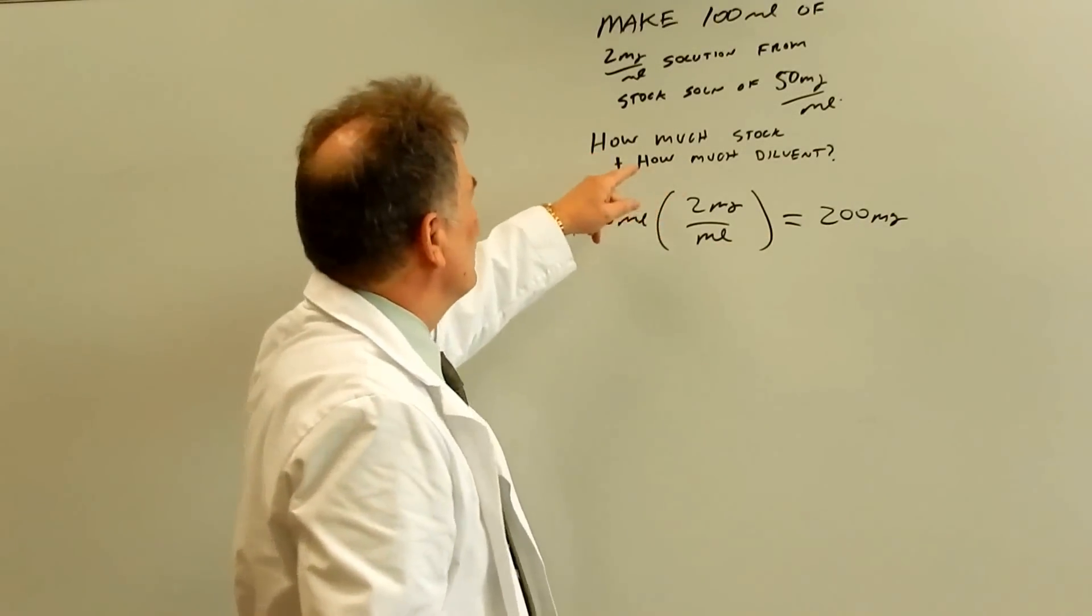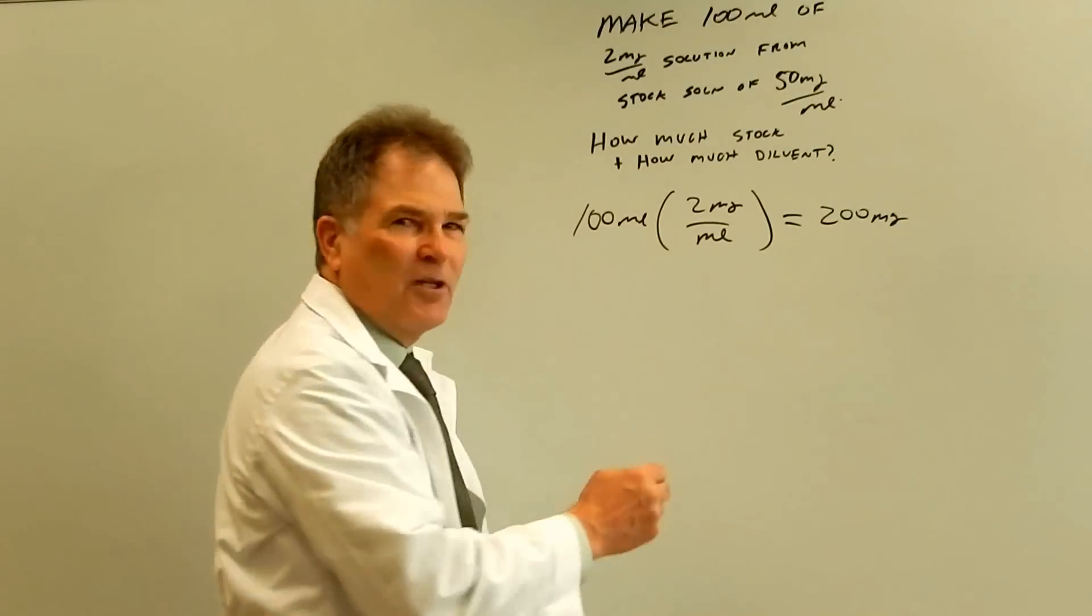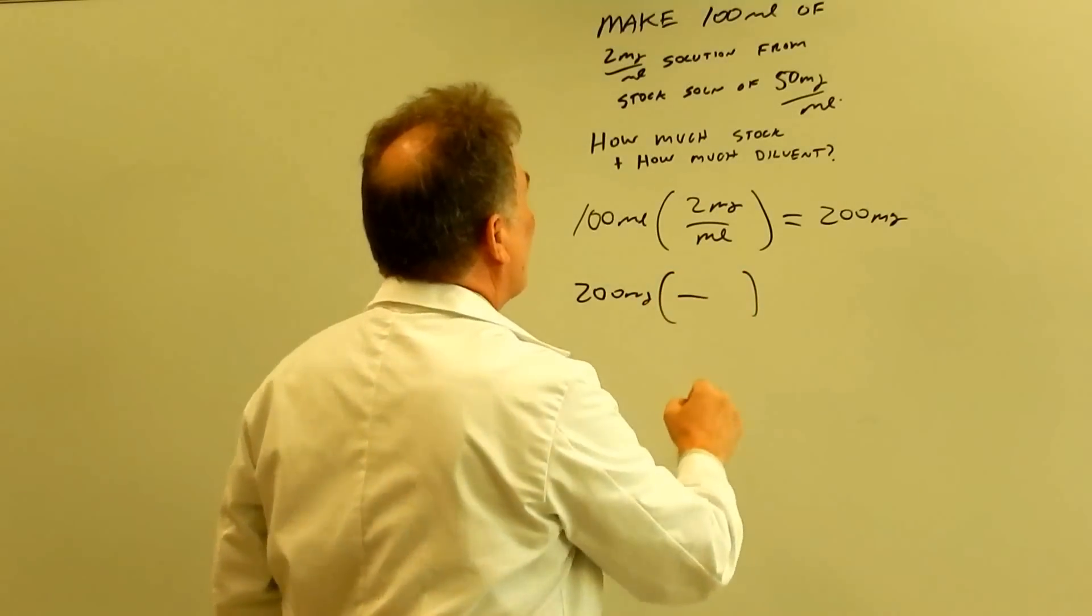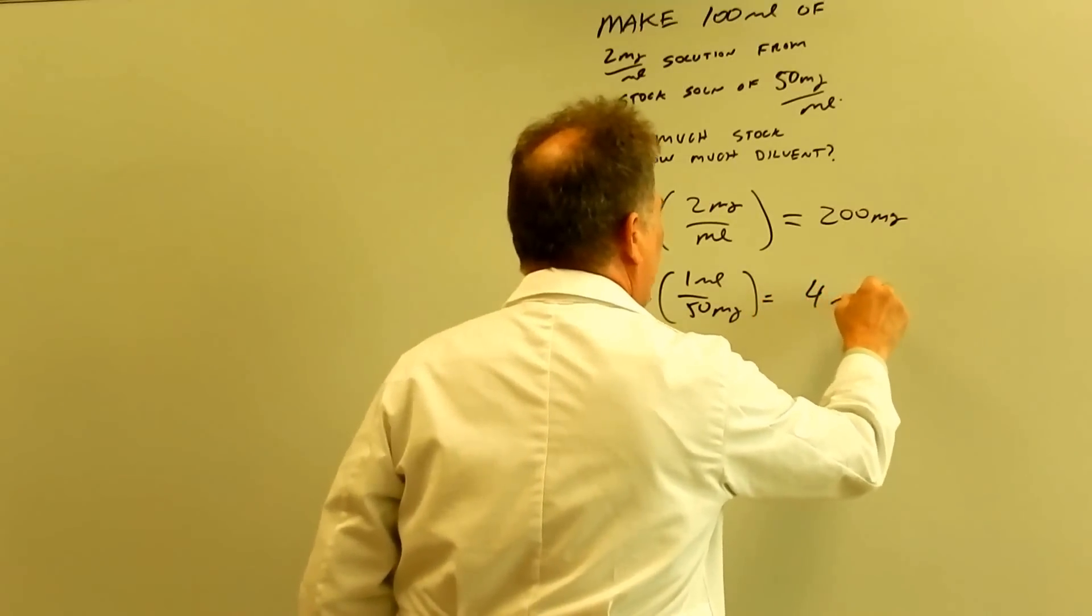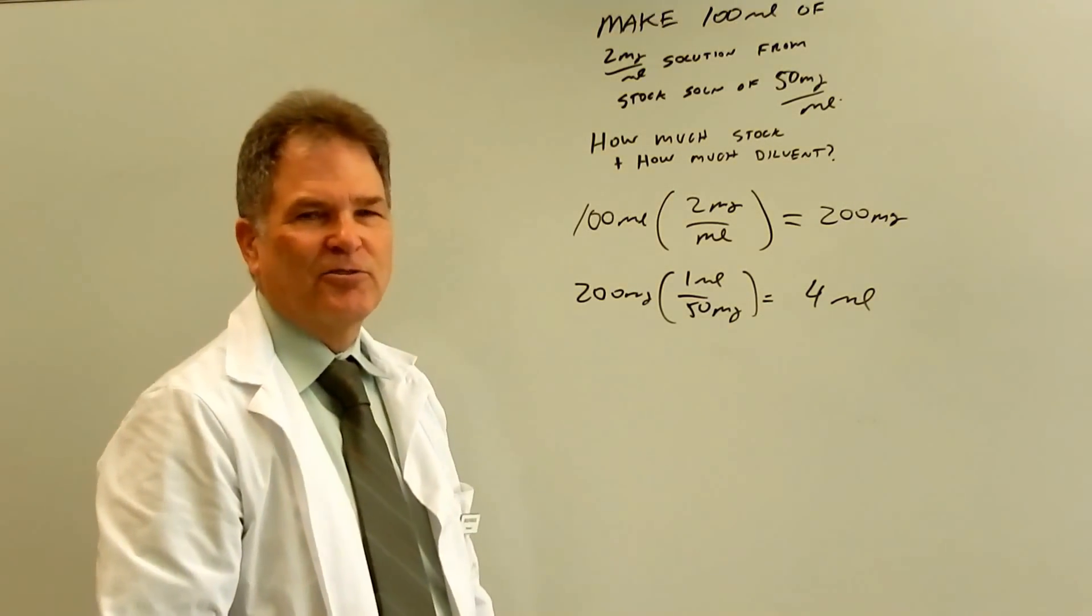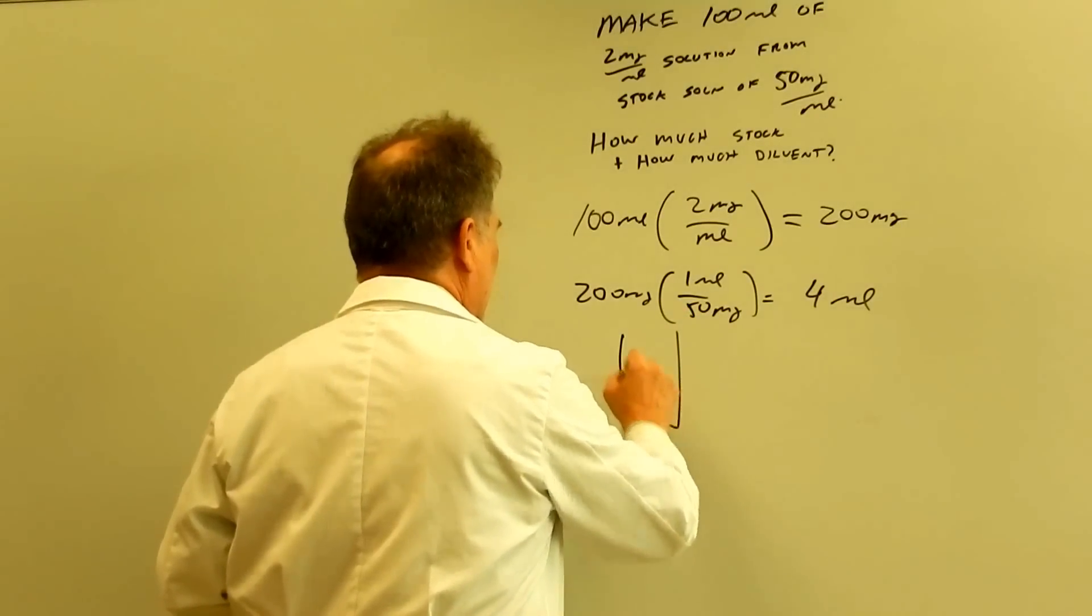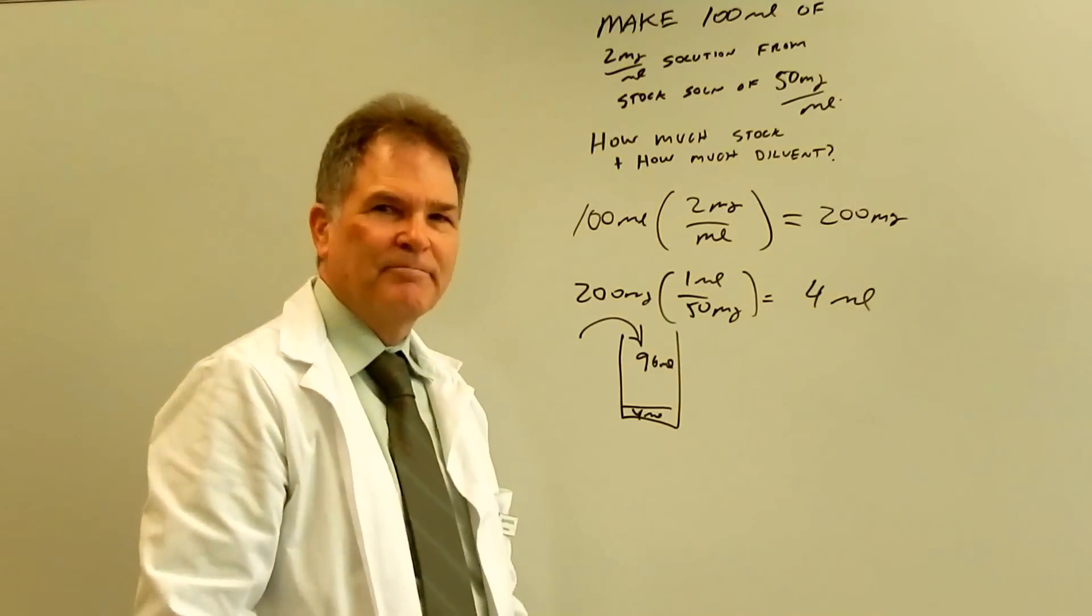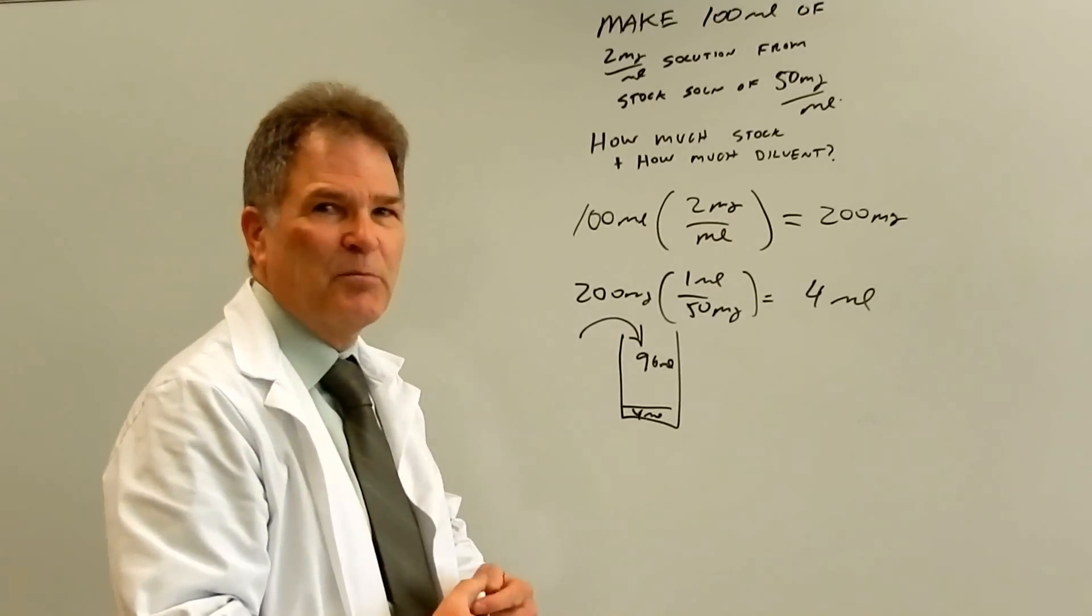Okay, so you need 100 ml, and there's 2 milligram per ml. So you need 200 milligram. Sound familiar? So now you can look to see where do you get your milligrams. So you look on the shelf and you see you have a stock solution of 50 milligram per ml. So you've got 200 milligram, and on the stock is 1 ml per 50 milligram. So you need 4 ml of your stock solution. So you have your bottle here. You put your 4 ml, and then you put 96 more ml of diluent.